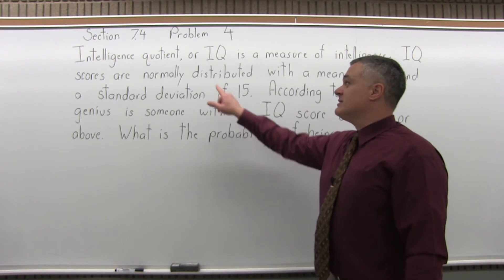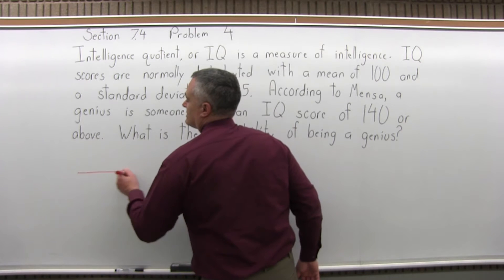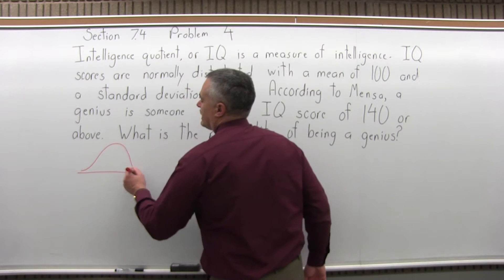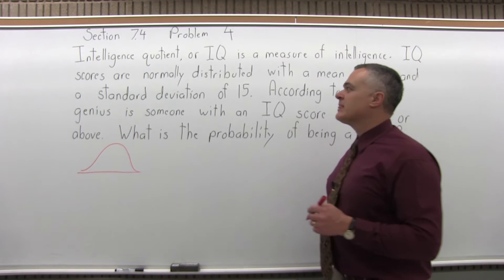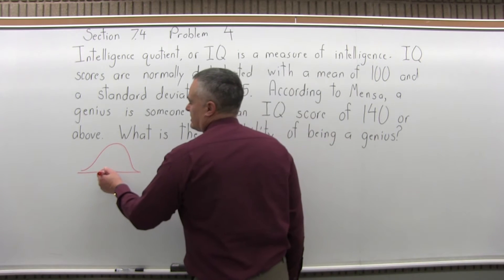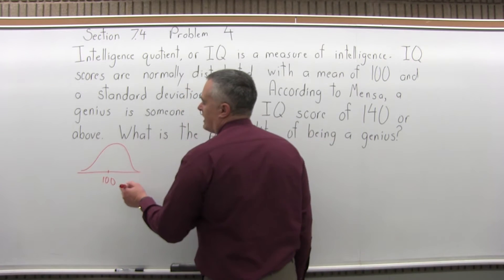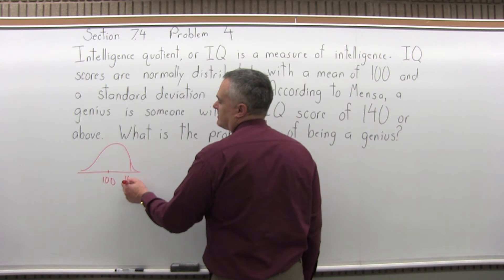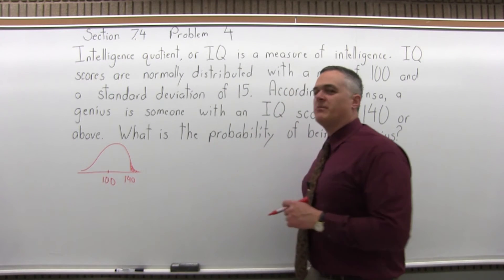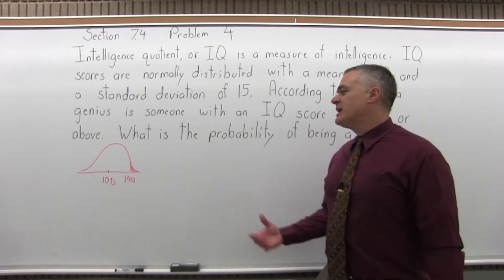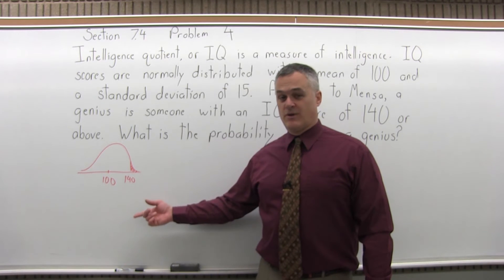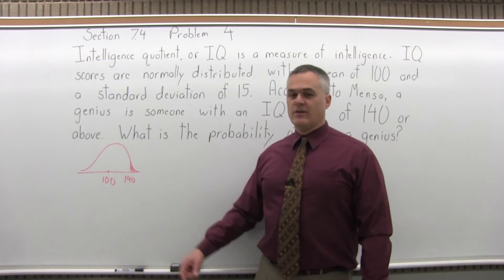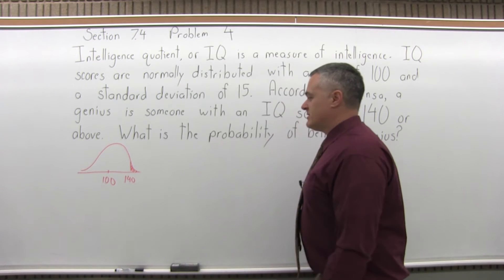The fact that this says normally distributed means we get to use the bell curve and the standard normal chart that goes with it — that's how we're going to answer the question. The average is 100, so that goes in the middle. 140 or above is what makes somebody a genius, and we can't look up a 140 IQ directly in the standard normal chart. What we have to do is find the z-score for 140, then look that up in the chart.